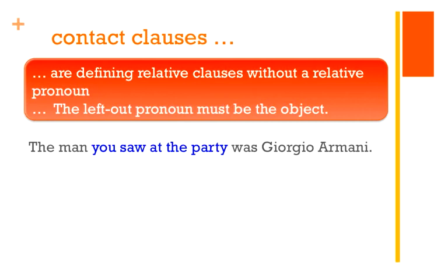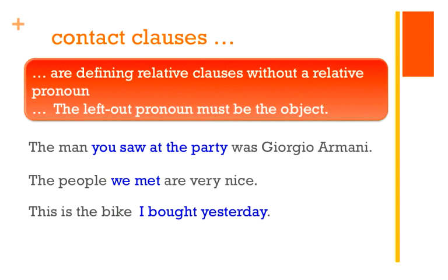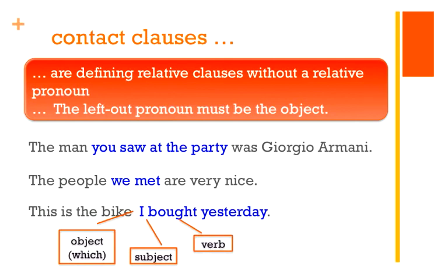It's a contact clause — it's a defining relative clause, no comma please. 'The people we met are very nice' — the complete version is 'The people who we met are very nice.' 'We' is your subject, 'met' is your verb, and the left-out pronoun 'who' is your object. And 'This is the bike I bought yesterday' — again, the 'which' is left out. 'The bike which I bought yesterday' — it's the object because 'I' is the subject and the verb 'bought' comes right behind it. When the object pronoun is left out, we call this defining relative clause a contact clause because it makes contact right away with the main clause without the pronoun in between.